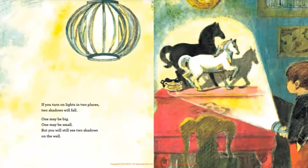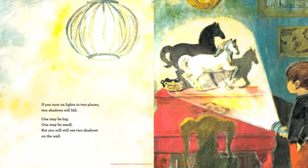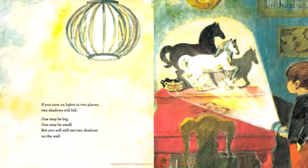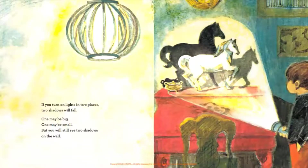If you turn on lights in two places, two shadows will fall. One may be big, one may be small. But you will still see two shadows on the wall.